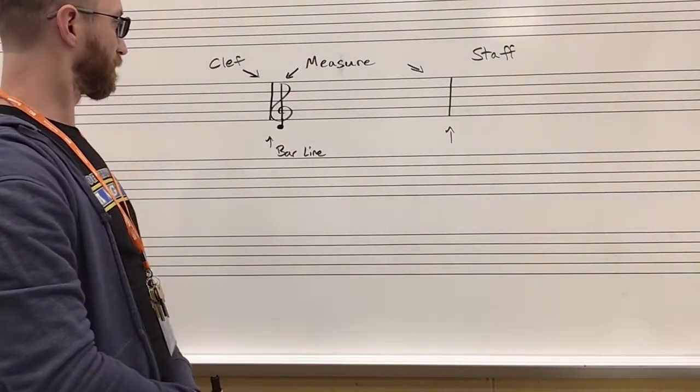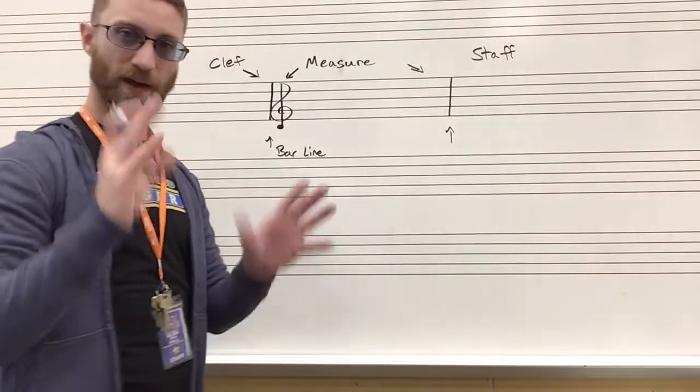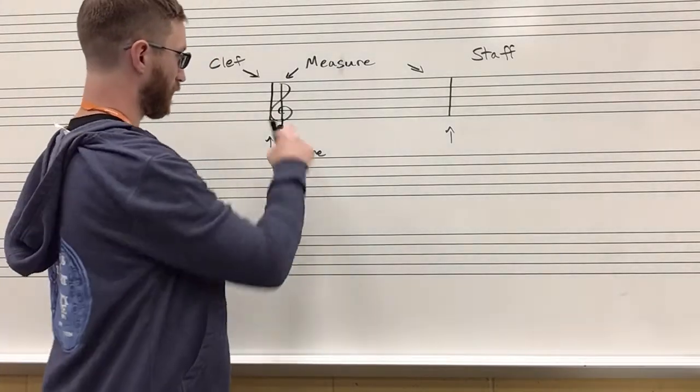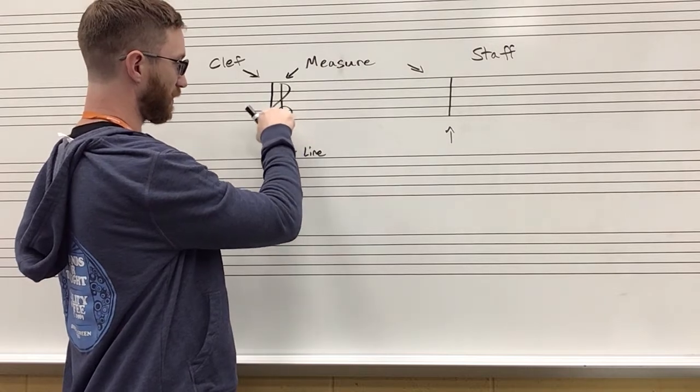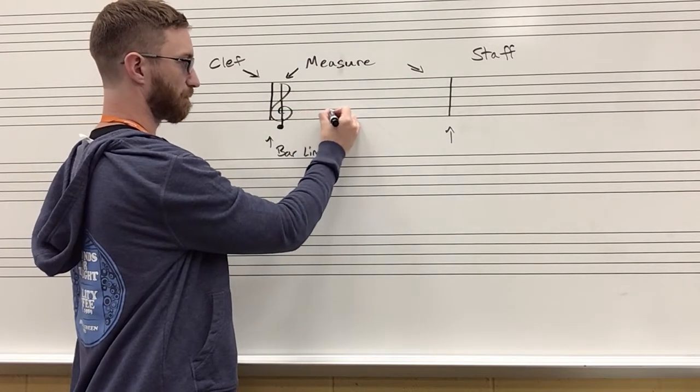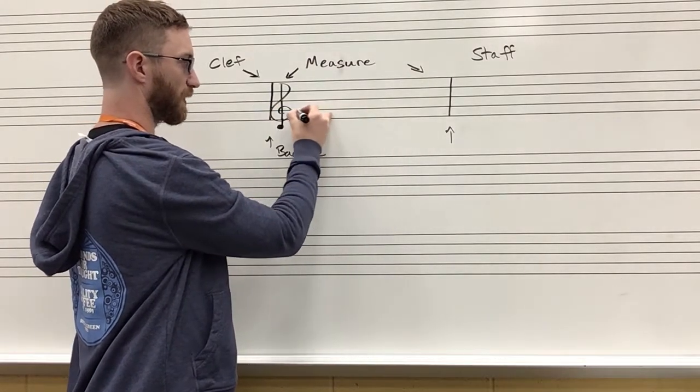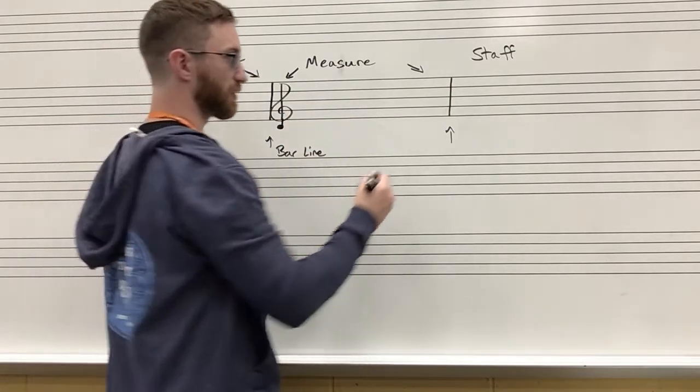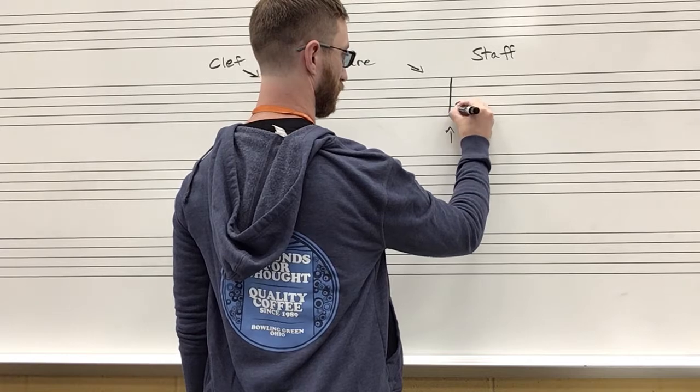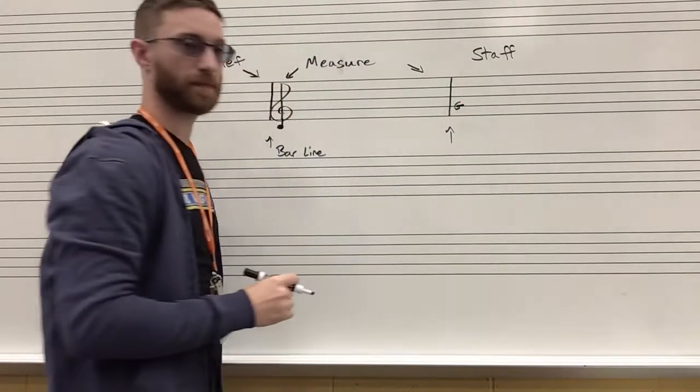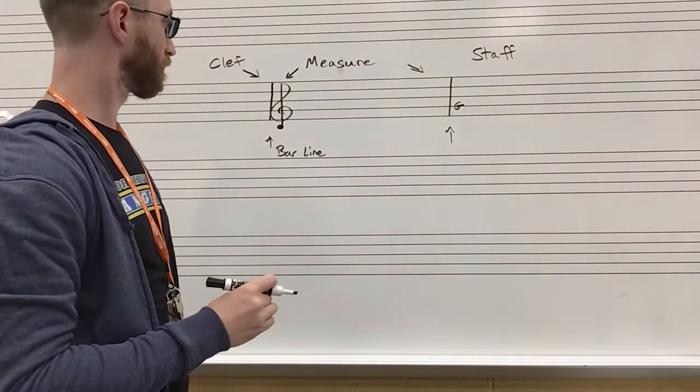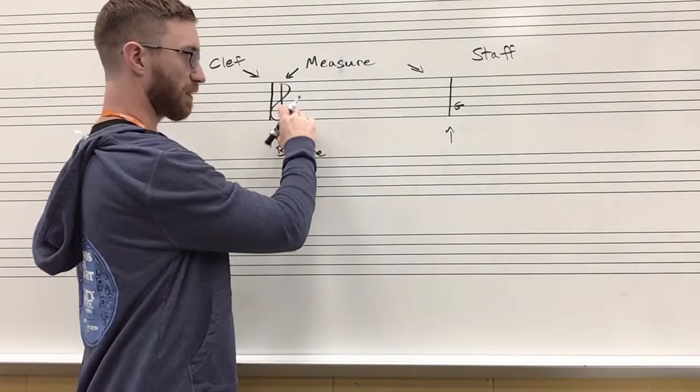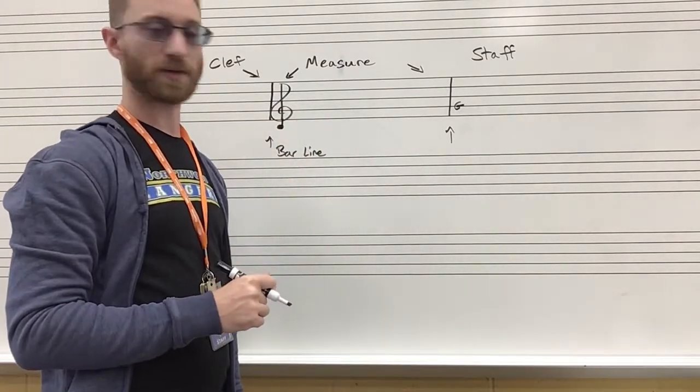The treble clef is an old-fashioned way of saying the letter G, and we swivel around the second line here. What that is telling us is that the second line is G. Based off of that line being G, I can now figure out where the rest of the notes are.